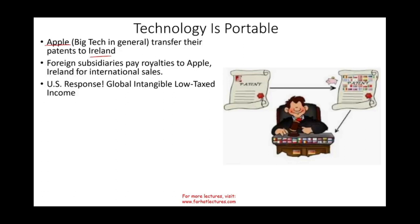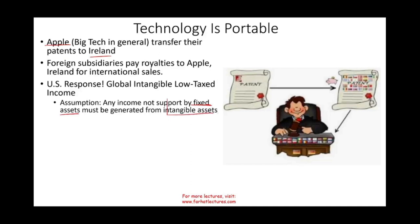There are several assumptions being made here. The first assumption is that any income not supported by fixed assets must be generated from some type of intangible — an idea. In today's economy, all big tech companies' most important assets are their patents. So if your income is not clearly supported by fixed assets, it must be coming from intangible assets. The second assumption is that the patent was created in the U.S., and therefore the income from that patent should be taxed in the U.S.